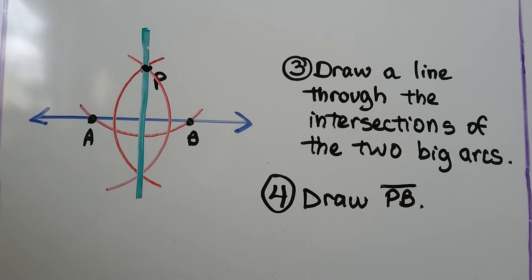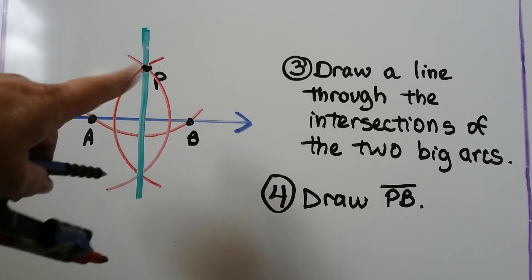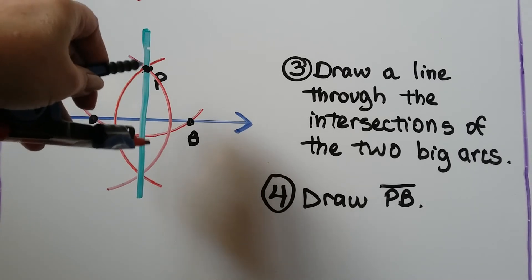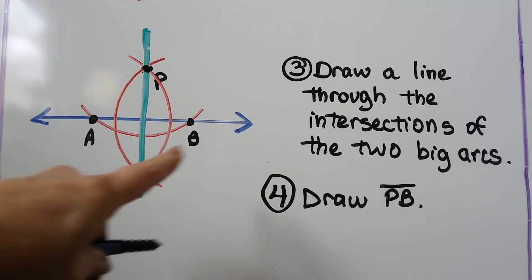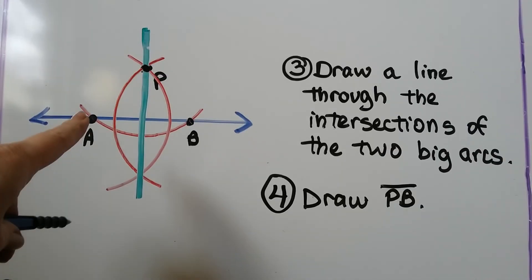Quick recap. We had a line with point P above it. We set the compass a little farther than the distance from P to the line and made an arc with two intersections. We labeled them A and B.